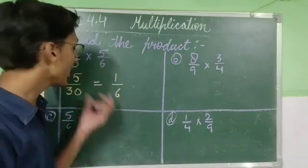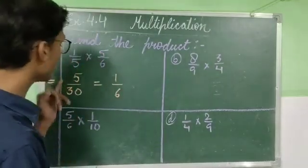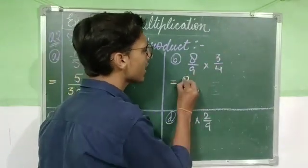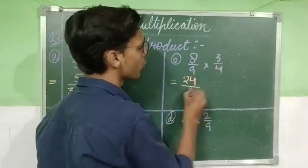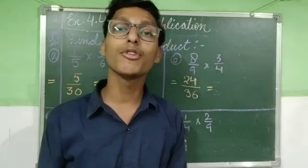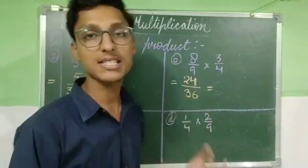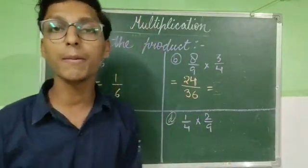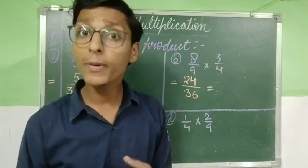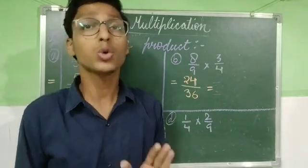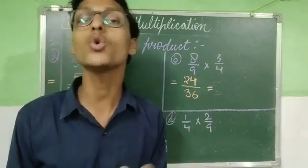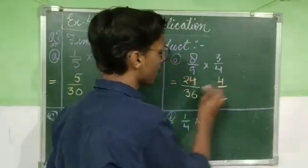5/30 — we will divide by 5 because both numbers come in the table of 5, giving 1/6. Next sub-question: 8/9 into 3/4. 8 threes are 24 and 9 fours are 36, giving 24/36. It is a proper fraction but we need to convert it to simplest form. 24 and 36 both come in the table of 2, 3, 4, and 6. The highest common factor is 12.